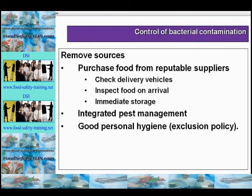So how do we control bacterial contamination? We do that by removing the sources of the bacteria — for example, purchase food from reputable suppliers, check delivery vehicles and delivery drivers, inspect food on arrival, ensure immediate storage, maintain a good integrated pest management policy, high standards of personal hygiene including an exclusion policy, and also a visitors policy.